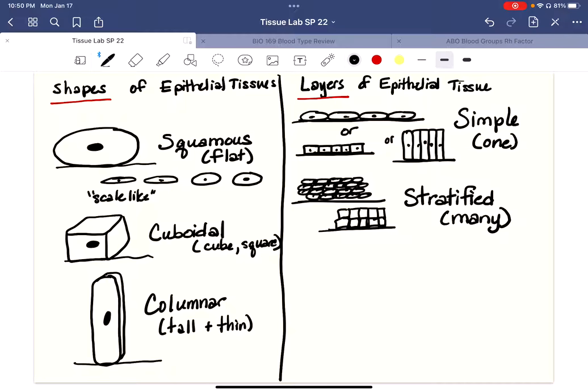Another type of layer we could have would be something called pseudostratified. I'm going to write that first so you can see it. Pseudo means false. Pseudo means false, so pseudostratified means false layers. And that it looks like it's many layers, but it's really not. So how we could draw that simply is to use this columnar cell.